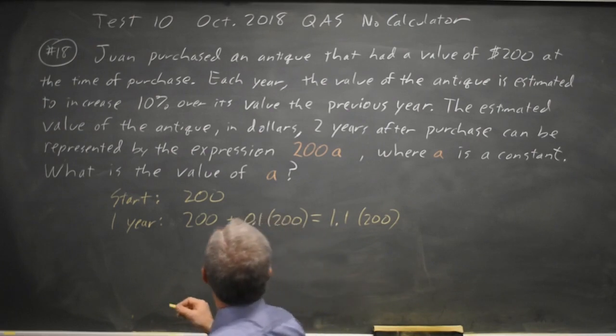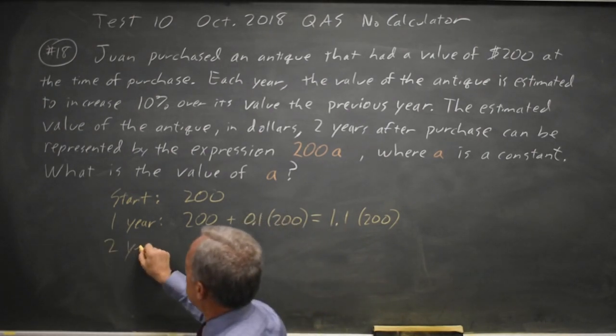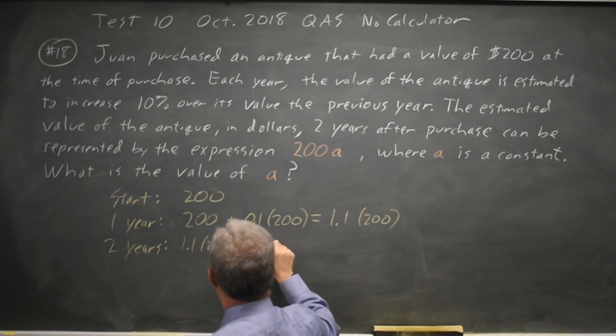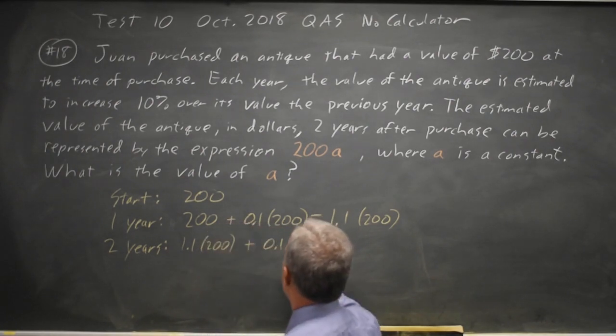After two years, which is the amount they're asking for, we have our previous value, 1.1 times 200, plus 0.1 times that previous value.